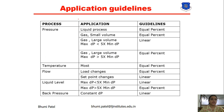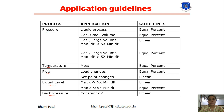Here you can see that we have different processes used in instrumentation — for example, pressure, temperature, flow, liquid level, and back pressure. For the pressure process, in a liquid process, the application guideline for valve characteristics is to use equal percentage. For gas with small volume in the same pressure process, we can also use equal percentage.